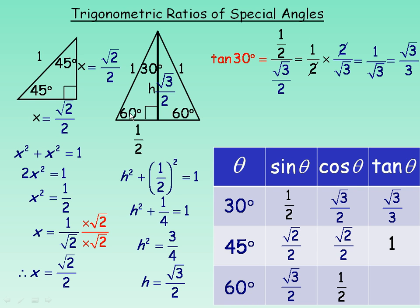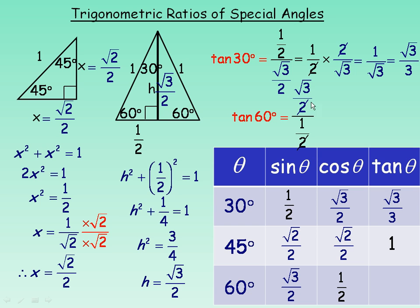Finally, for the tan of 60°, we use the 30-60-90 triangle. Tan is opposite over adjacent: root 3 over 2 is the opposite side, and one half is the adjacent. Dividing root 3 over 2 by one half — the denominator twos divide out — leaving root 3 over 1, which equals root 3. So the exact value of tan 60° is root 3. Now we're going to use these values.